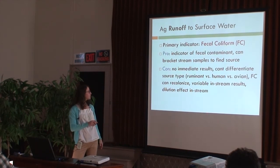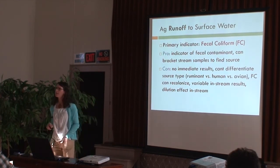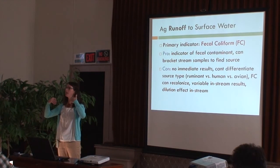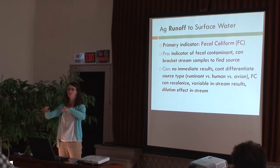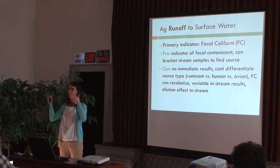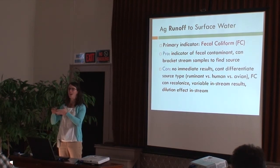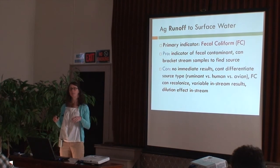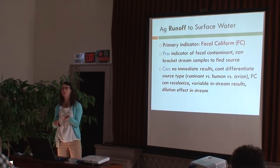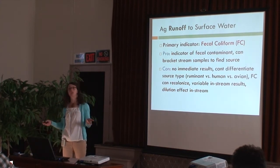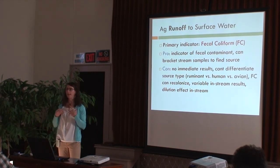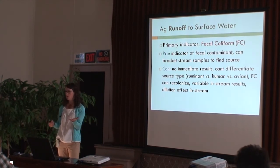There are also dilution effects and variable in-stream results. Fecal coliform can actually recolonize in some cases. In an intermittent stream that's been dry with some manure that got in, when water starts running again it may pick that up and carry it downstream — it doesn't mean the manure was applied at that time; it may have happened months earlier. If you know what's going on on your land and fields, you can defend yourself with that information. You can even take your own water quality samples and correlate with monitoring agency results.